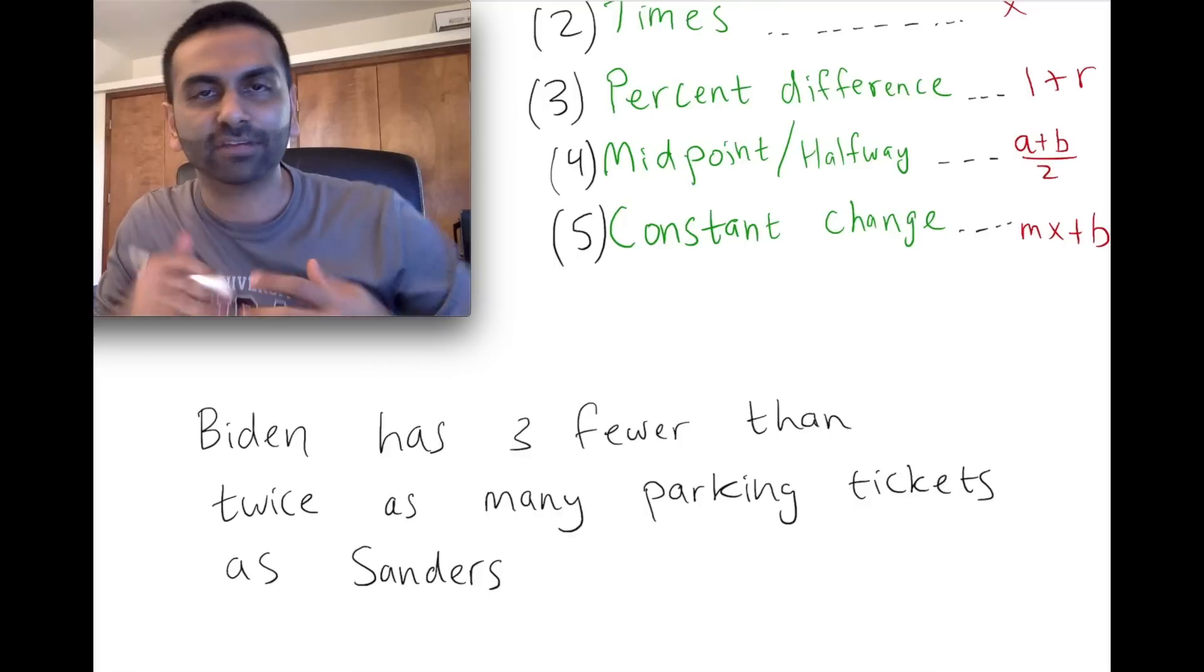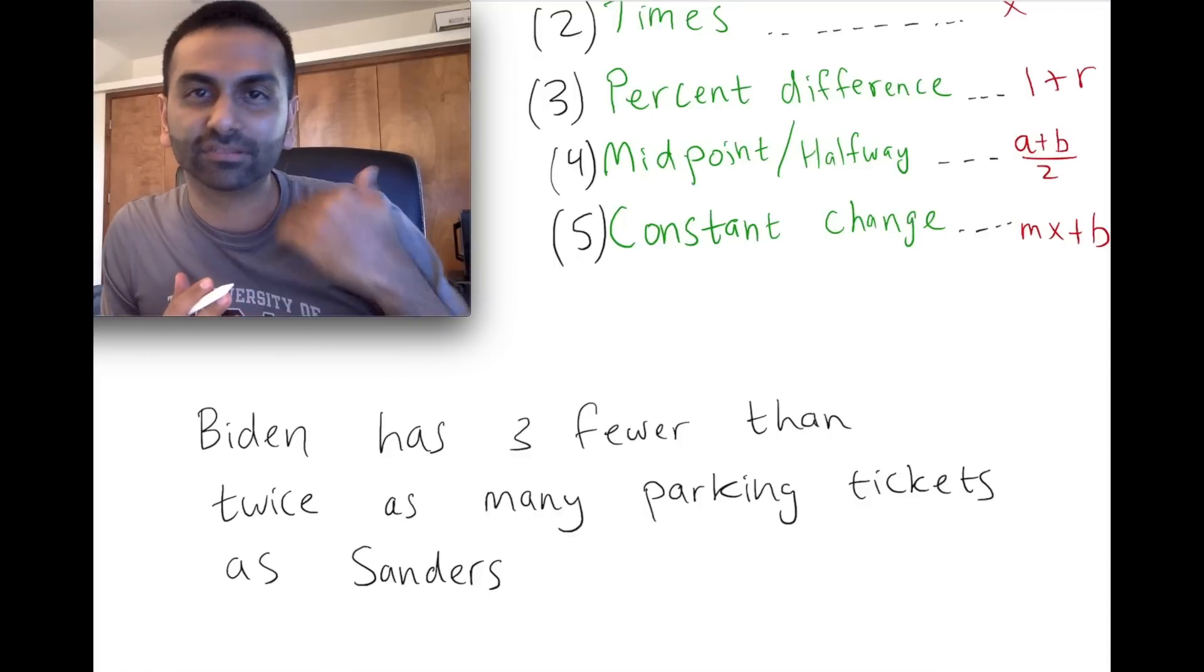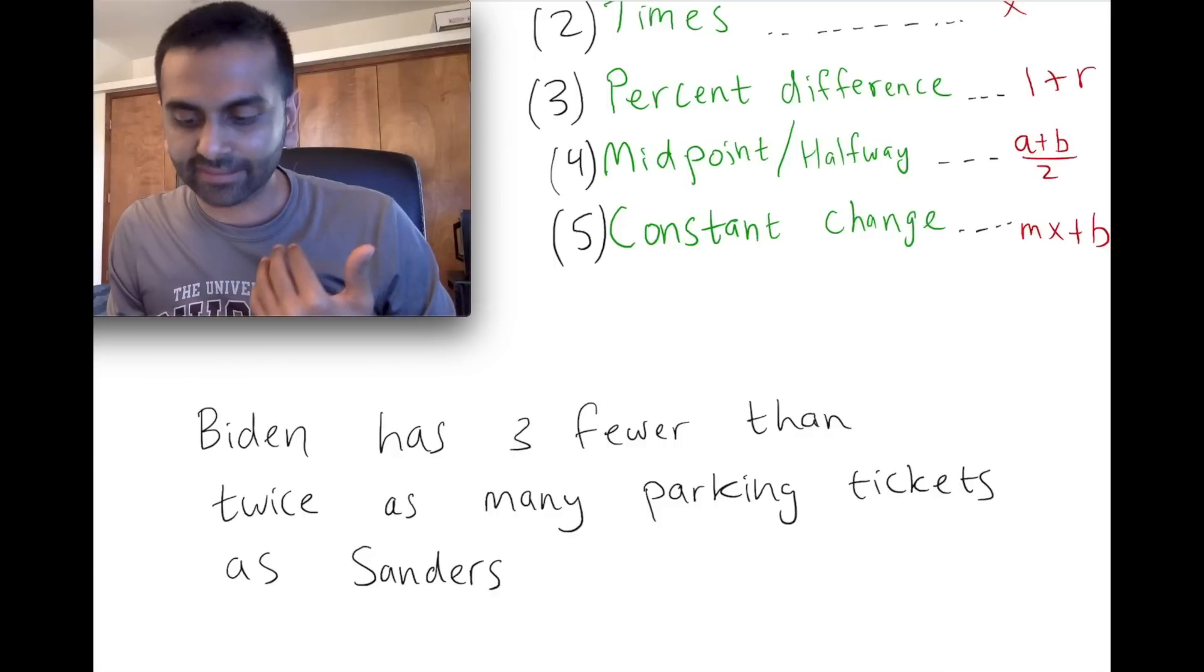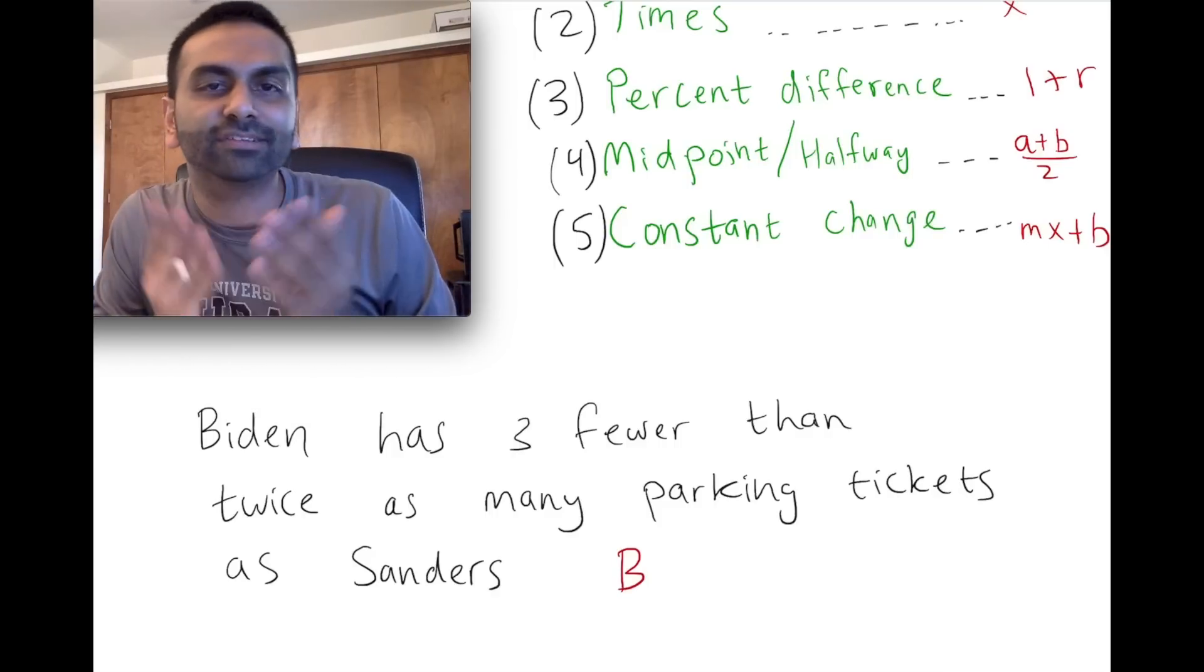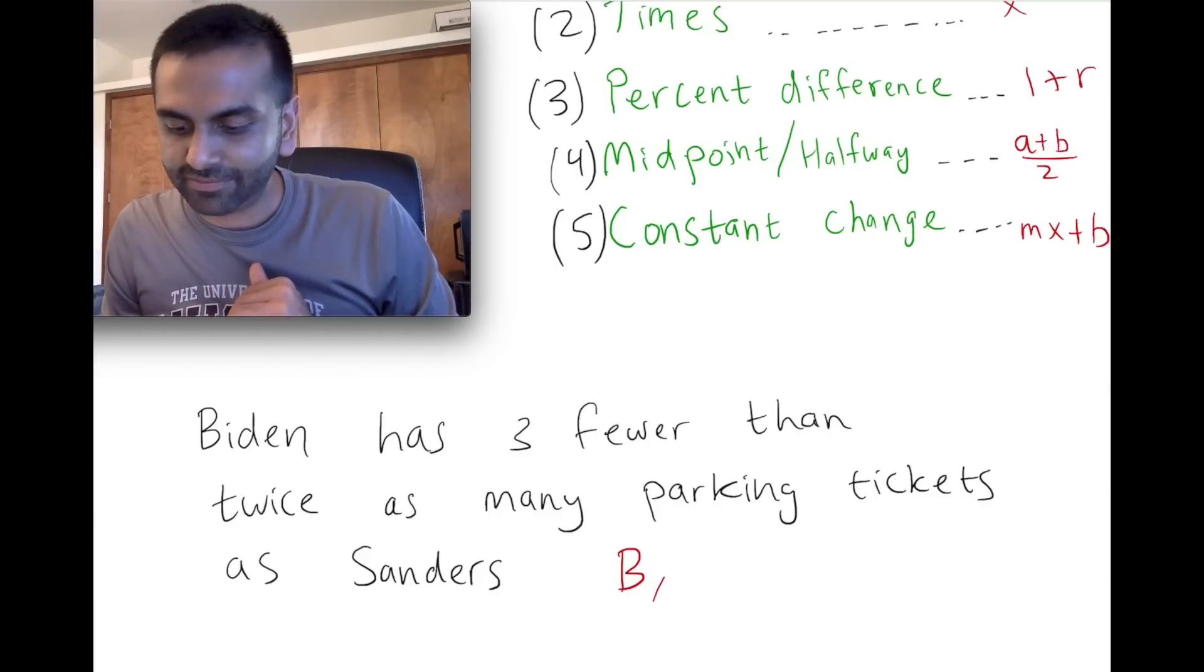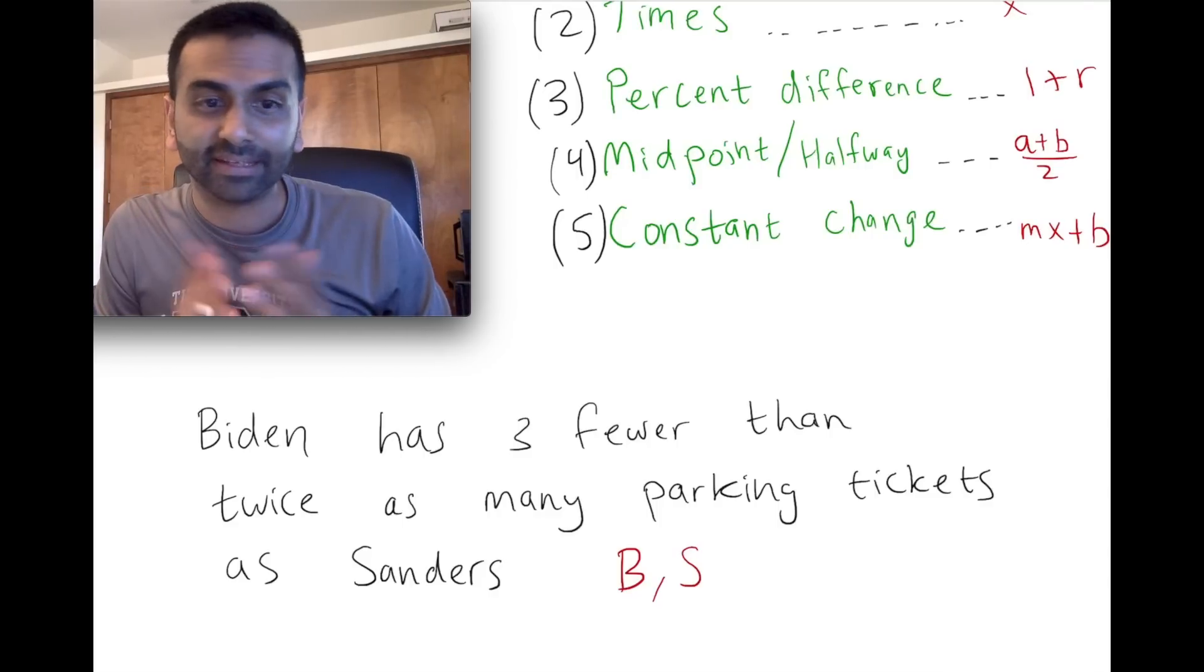Part of it is taking ownership over this—rather than being passive and having the teacher give you variables, you're the one who's going to create them. I'm going to say b, I'm defining this thing called b, and it's the number of parking tickets that Biden